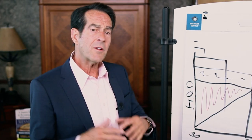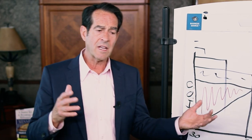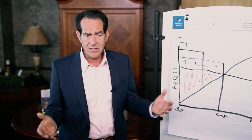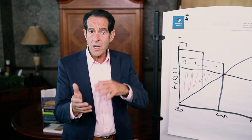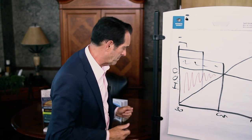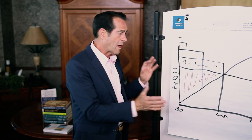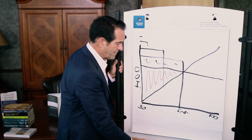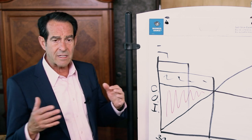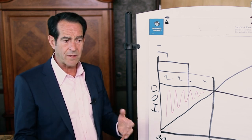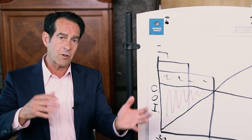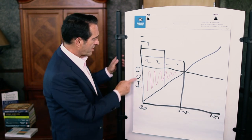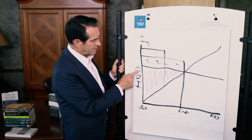In other episodes, I address the question of what is cash value, so you can watch those to have a greater understanding. But I'm going to summarize from a chart I used in another episode. When we look at insurance — whether it's term insurance, whole life insurance, or universal life insurance — they all have a cost of insurance, we call it COI.